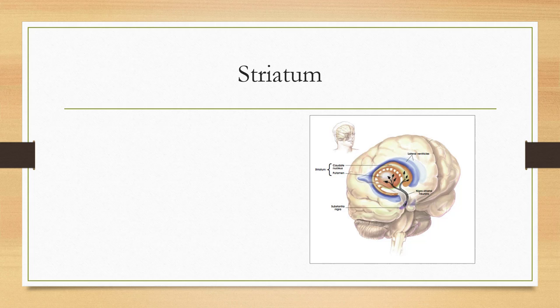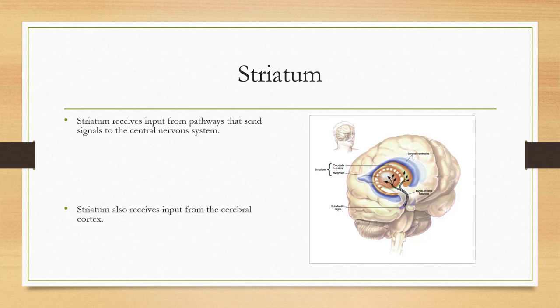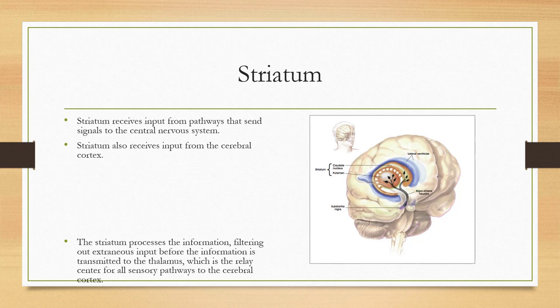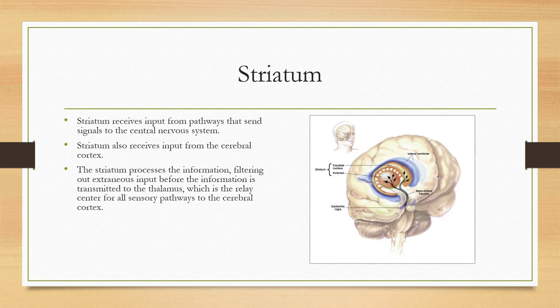The striatum receives input from pathways that send signals to the central nervous system and also from the cerebral cortex. The striatum processes information, filtering out extraneous content before transmitting it to the thalamus, which is the relay center for all sensory pathways to the cerebral cortex. This is an important function that appears to be altered in obsessive-compulsive disorder.